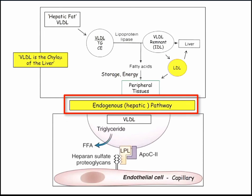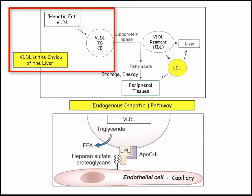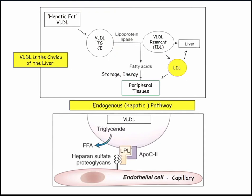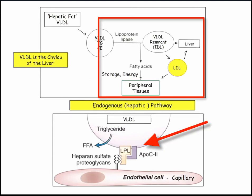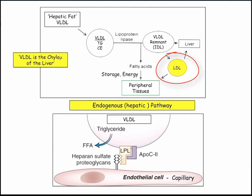Now picking up the story from the liver — the endogenous pathway. The liver synthesizes VLDL. VLDL is the chylomicron of the liver. They go out to the circulation where they get acted on by lipoprotein lipase, producing remnants called IDL that are taken up by the liver. Or this remnant is further metabolized to LDL, taken up by the liver or peripheral tissues.